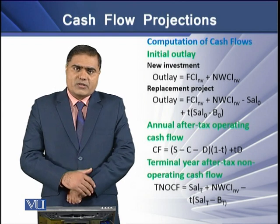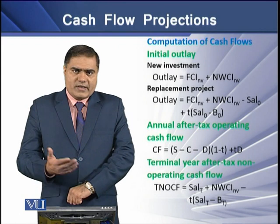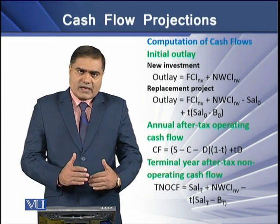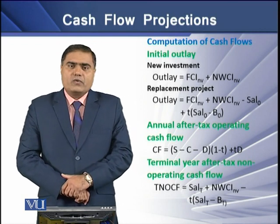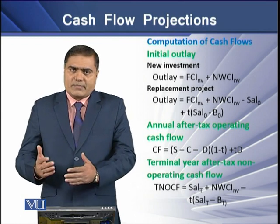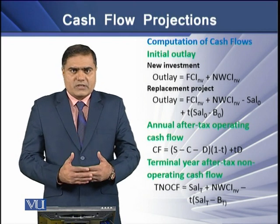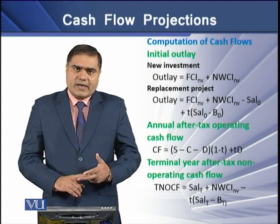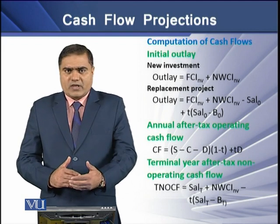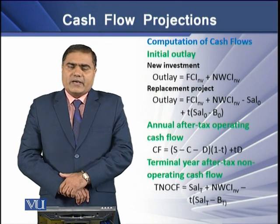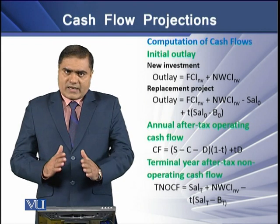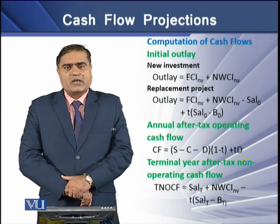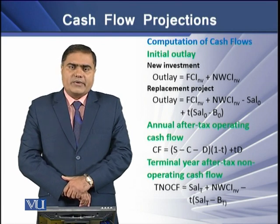Finally, for terminal year cash inflows — also known as non-operating cash inflows — we take the salvage value or sale proceeds of assets sold at the end of the asset's life and add the recovery of investment in net working capital items. We have sale proceeds of fixed assets plus recovery from net working capital items, and from this sum we deduct the tax-adjusted gain on the sale proceeds of the fixed capital investment. The resulting figure is the terminal year after-tax non-operating cash inflows.